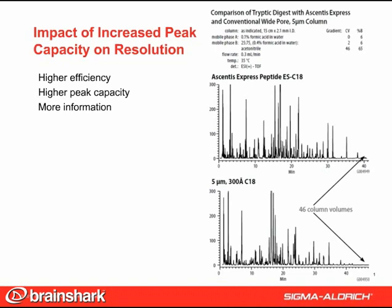Here is a visual demonstration. This figure compares the chromatograms of a complex tryptic digest on a typical wide pore C18 column versus the Ascentus Express Peptide ESC18. Many more resolved peaks are visible on the Ascentus Express column.